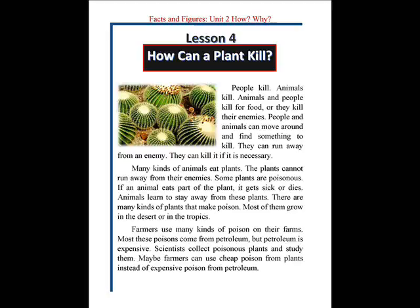There are many kinds of plants that make poison. Most of them grow in the desert or in the tropics. Farmers use many kinds of poison on their farms. Most of these poisons come from petroleum, but petroleum is expensive. Scientists collect poisonous plants and study them. Maybe farmers can use cheap poison from plants instead of expensive poison from petroleum.